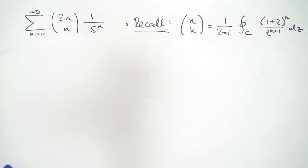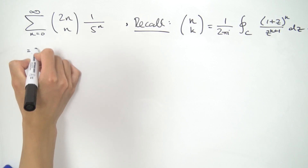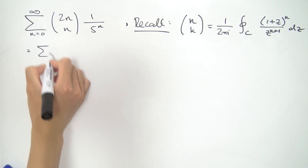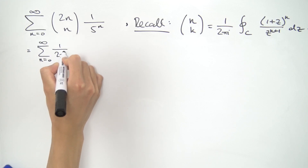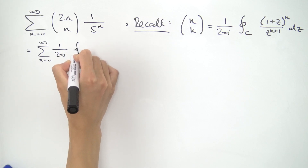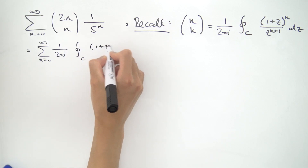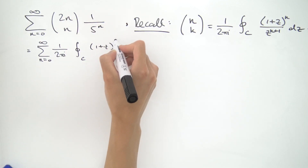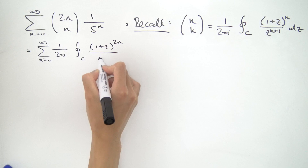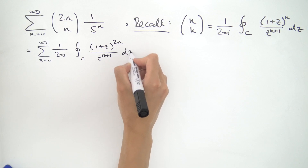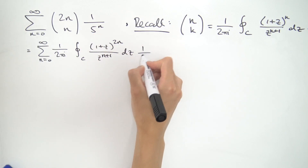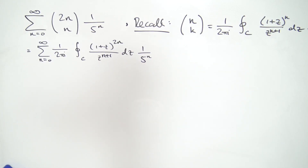If you haven't checked that video out you should probably do so — I'll put a link up here or in the description. So let's do a bit of a replacement on this sum. Now it's equal to the sum running from n equals 0 to infinity of 1 over 2 pi i, times the contour integral over z of 1 plus z raised to 2n, divided by z raised to n plus 1, and also 1 over 5 to the n.